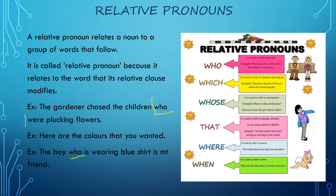Now let us look at different kinds of relative pronouns. Who is used to refer to people. Which is used to refer to animals and objects when we have an option. Whose refers to possession. That refers to people and animals. Where refers to places. When refers to time. So these are a few important relative pronouns, and they are used to join two sentences.